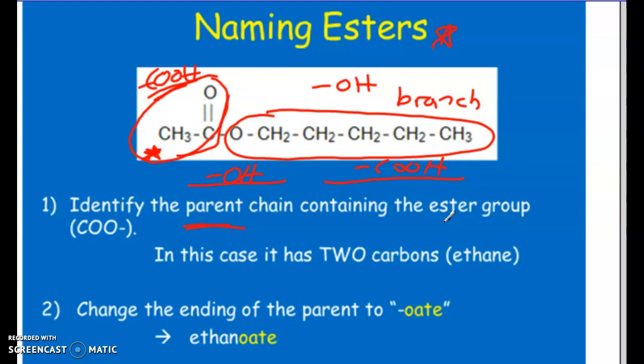It'll make more sense once we look at more examples. But there is, of course, there always is a suffix change. So here we have two carbons on our parent. So instead of ethane, it becomes ethanoate. So the O-A-T-E portion indicates that we have an ester.